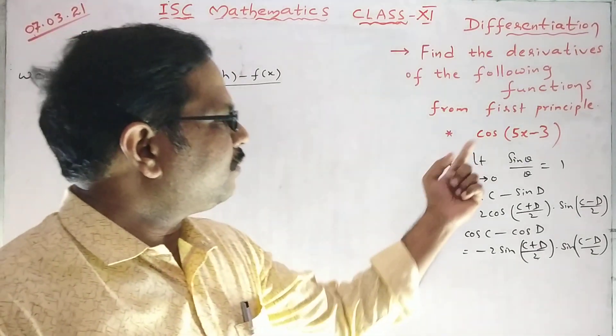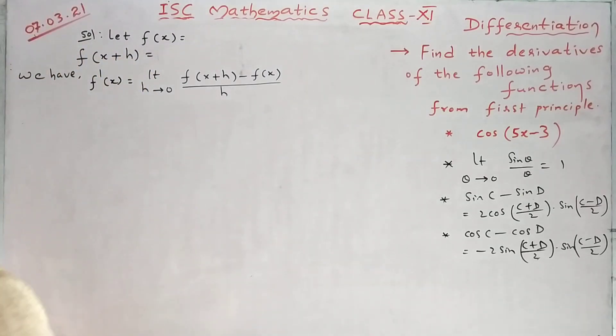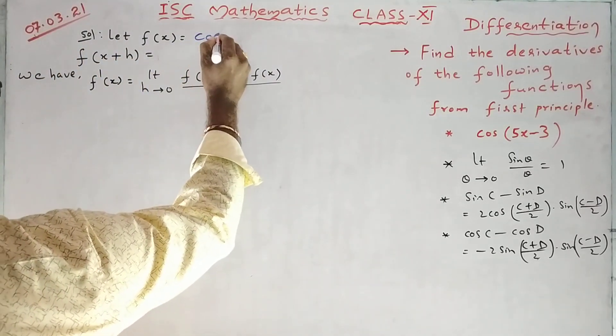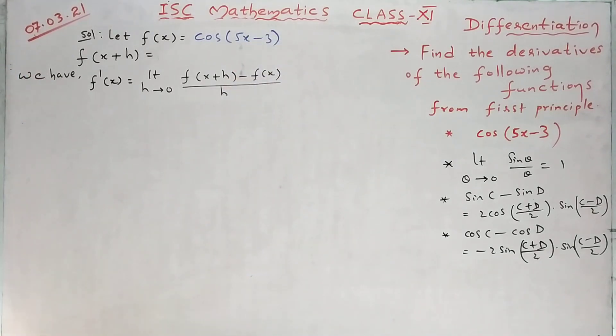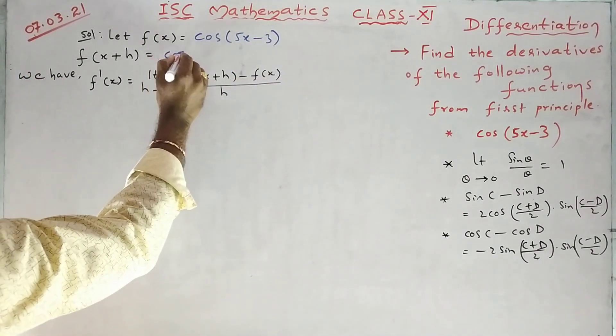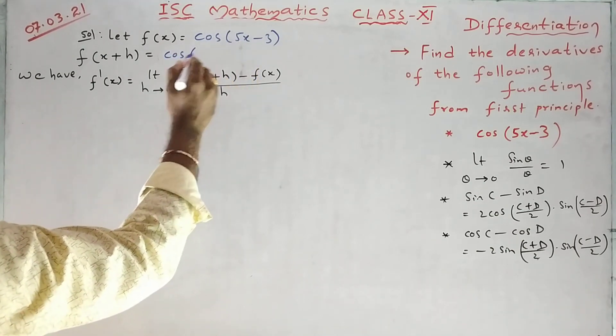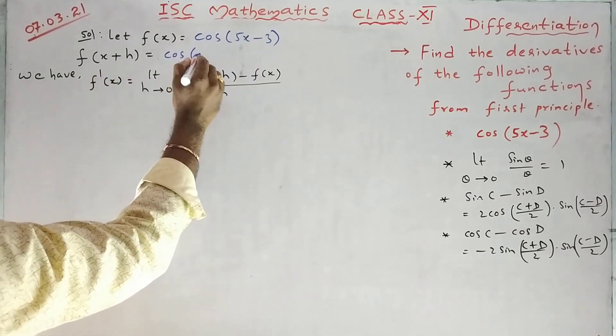Find the derivative of cos(5x minus 3), cos of 5x minus 3 by using first principle. So cos of, in the place of x keep x plus h.